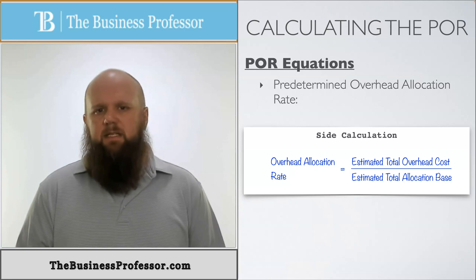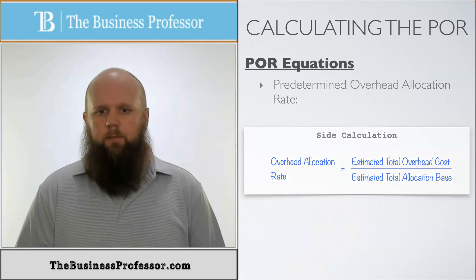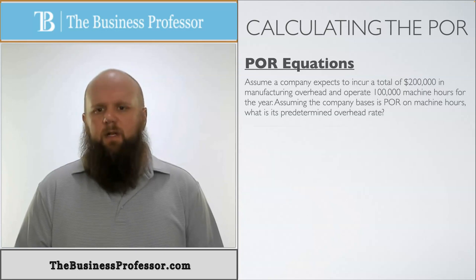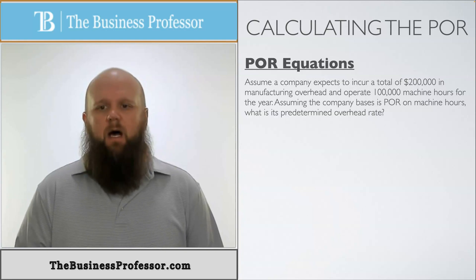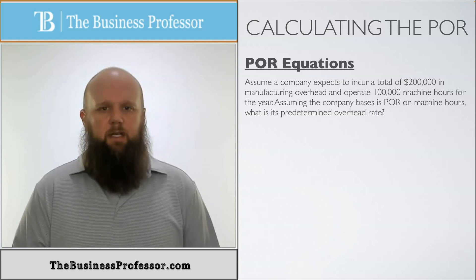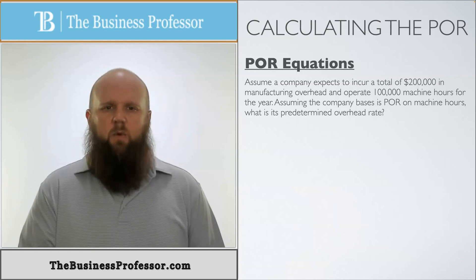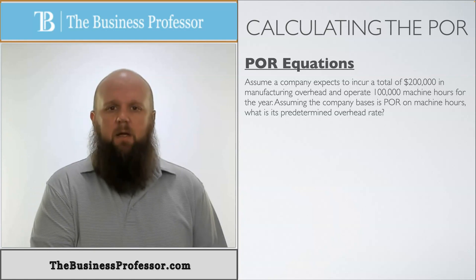So this is the equation. So let's actually put this in practice now. Let's do an example. Assume a company expects to incur a total of $200,000 in manufacturing overhead and operate 100,000 machine hours for the year. This is their anticipation. This is what they think they're going to have at the beginning of the year.